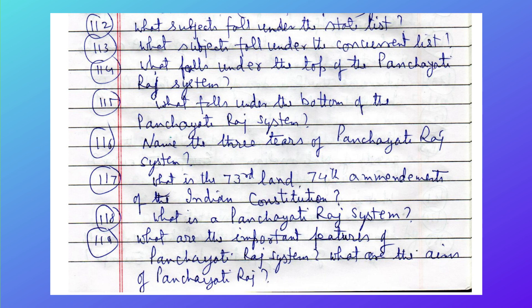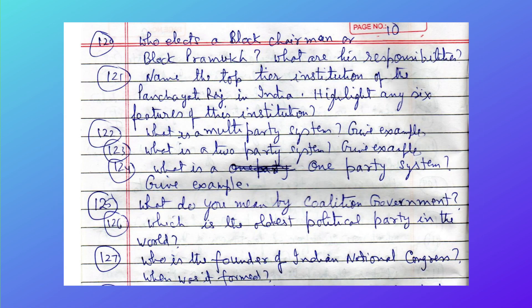What falls at the top of the Panchayati Raj system and what falls at the bottom? Name the top-tier institution of the Panchayati Raj in India and highlight any six features of this institution.